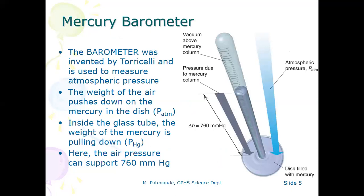So the mercury barometer — this is a device which no longer looks like the original design, but please sketch something like this in your notes. It was invented by an Italian named Torricelli. That name will be important.